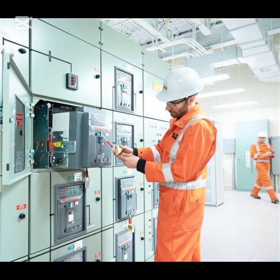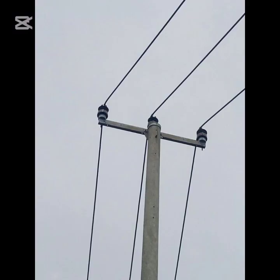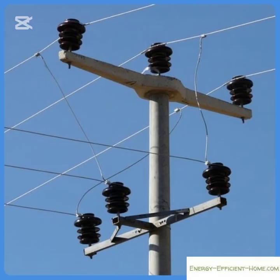Let's explain each insulator one after the other. One: pin type insulators. As implied by their name, these insulators are attached to the cross arm on the pole. They have a groove at their upper end for holding the conductor. The conductor is tied in the groove with an annealed wire made of the same material as the conductor. Pin type insulators are suitable for electric power transmission and distribution at voltages up to 33 kilovolts, but they become expensive and uneconomical for voltages above 33 kilovolts.